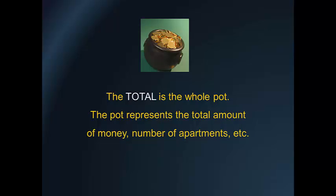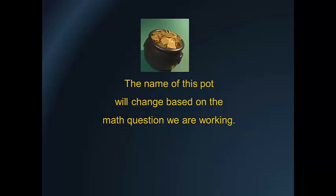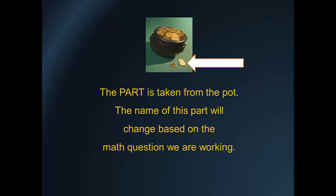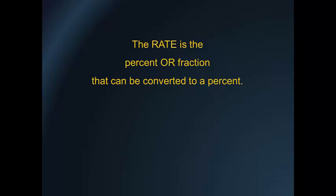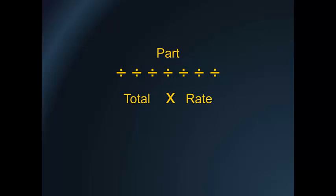The total is the whole pot — it represents the total amount of money, number of apartments, etc. The name of this pot will change based on the math question we are working. The part is taken from the pot, and its name will also change based on the question. The rate is a percentage or a fraction that can be converted to a percent. The total is the big number, the part is the little number, and the rate is the percent or fraction.